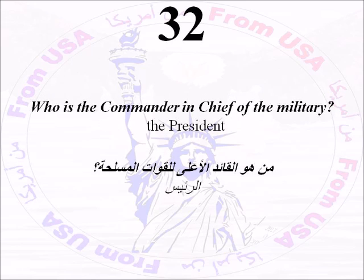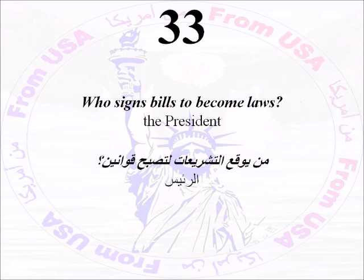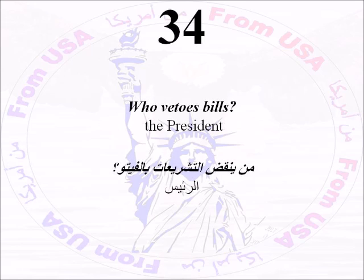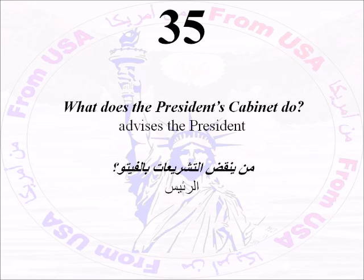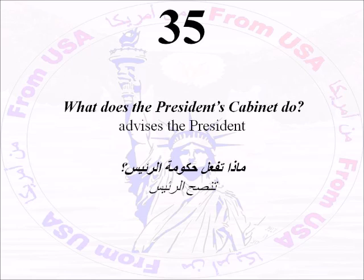Number Thirty-Two: Who is the commander-in-chief of the military? The president. Number Thirty-Three: Who signs bills to become laws? The president. Number Thirty-Four: Who vetoes bills? The president. Number Thirty-Five: What does the president's cabinet do? The president's cabinet advises the president.